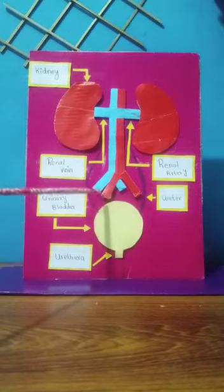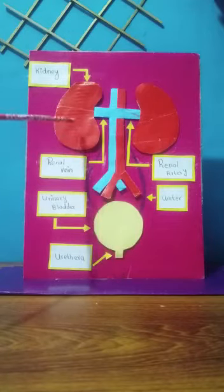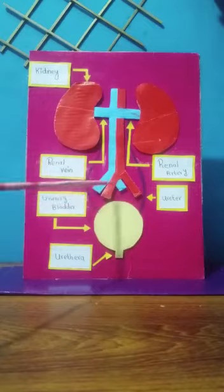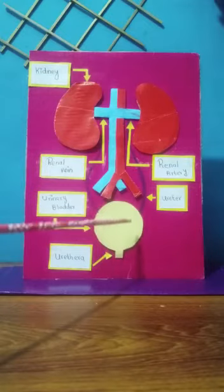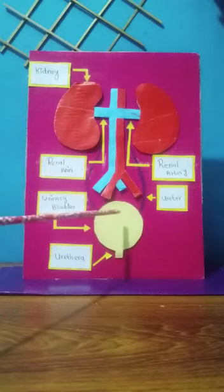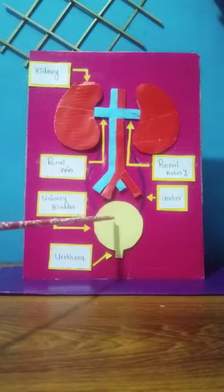The ureter connects the kidney with an oval, elastic and sac-like structure called the urinary bladder, which stores urine for some time.